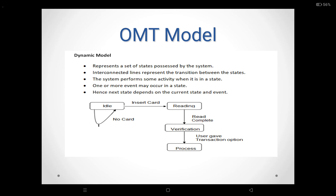The second model supported by Rumbaugh's OMT model is the dynamic model. The dynamic model represents a set of states. In this diagram, the interconnected lines represent the transition between the states. The system performs some activity when it is in a state. One or more events may occur in the state. The next state depends on the current state and the event.